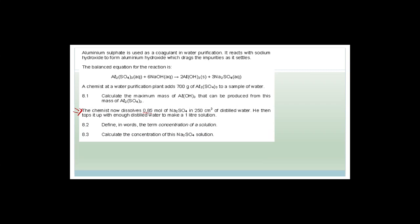We did the question on aluminium sulfate plus sodium hydroxide, which gives us aluminium hydroxide and sodium sulfate. The new question says: the chemist now dissolves 0.85 moles of the sodium sulfate in 250 cubic centimetres of distilled water and then tops it up with enough distilled water to make a one-litre solution. Concentration of a solution is the number of moles per unit volume.